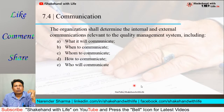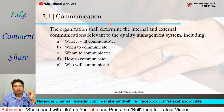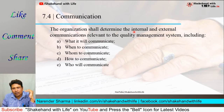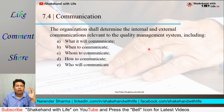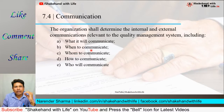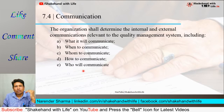Starting with Clause 7.4 which describes communication. The organization shall determine the internal and external communications relevant to the quality management system. This includes what the organization will communicate, when to communicate, whom to communicate, how to communicate, and on behalf of the organization who will communicate.